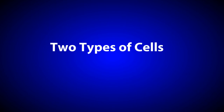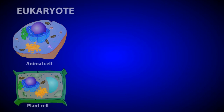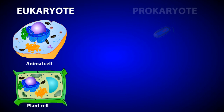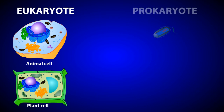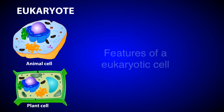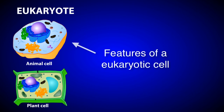On Earth, there are two major types of cells: eukaryote and prokaryote. Eukaryote cells are more complex in structure and function than prokaryote cells. In this tutorial, we'll tour the major features of a eukaryotic cell using both an animal cell and a plant cell as examples.